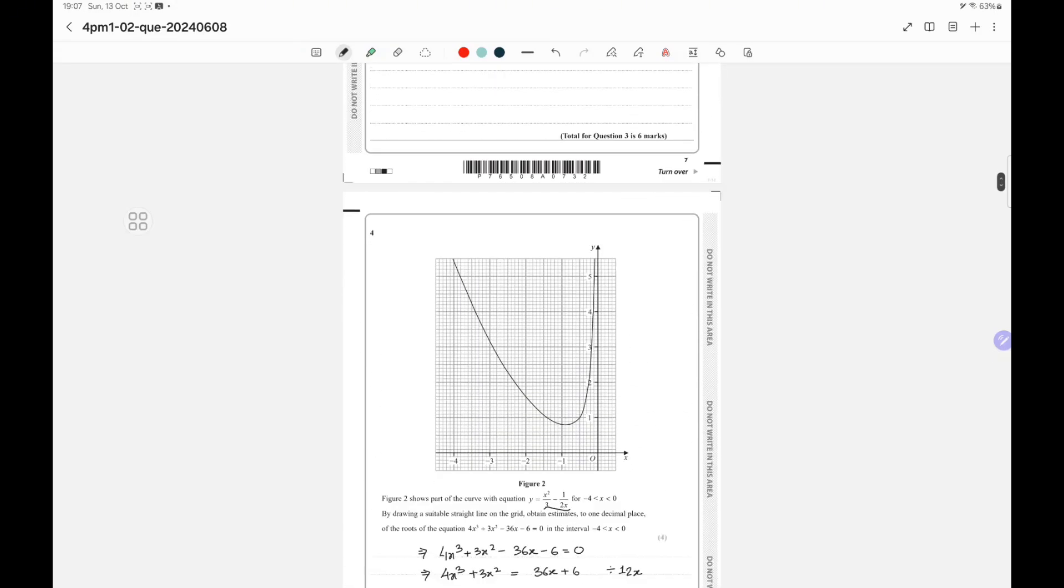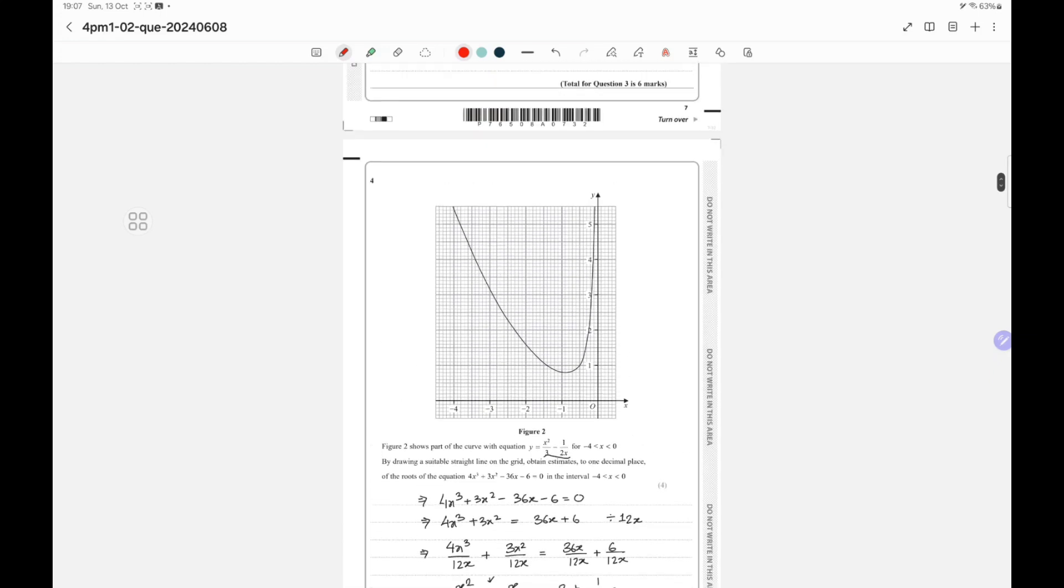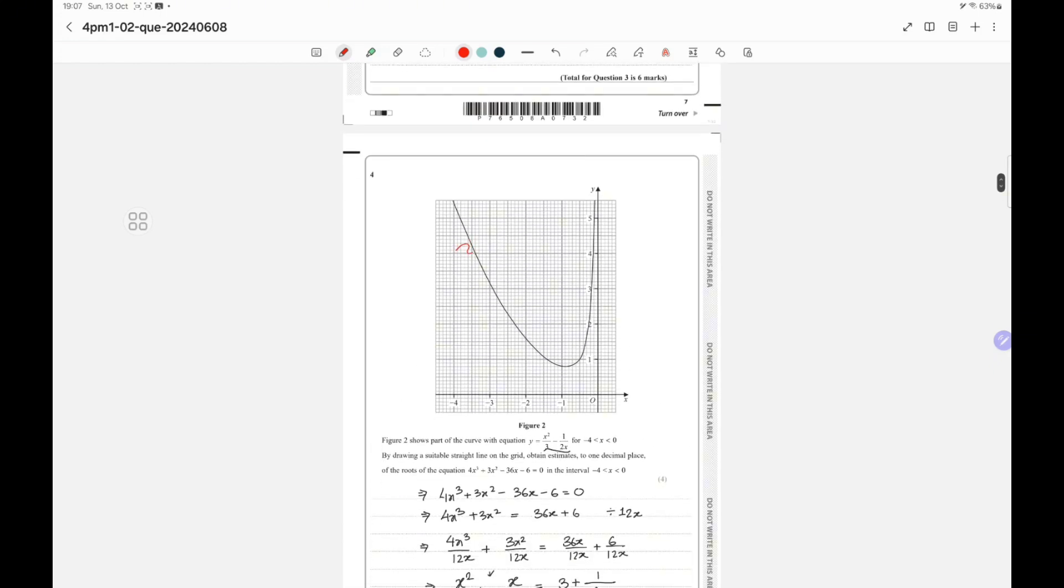If you put the value of x equals minus 4 in this straight line equation, we get the y value. That is 3 minus minus 4 divided by 4, which becomes y equals 3 plus 1, so y equals 4. When x is minus 4, the y value is 4, so somewhere over here is the point.